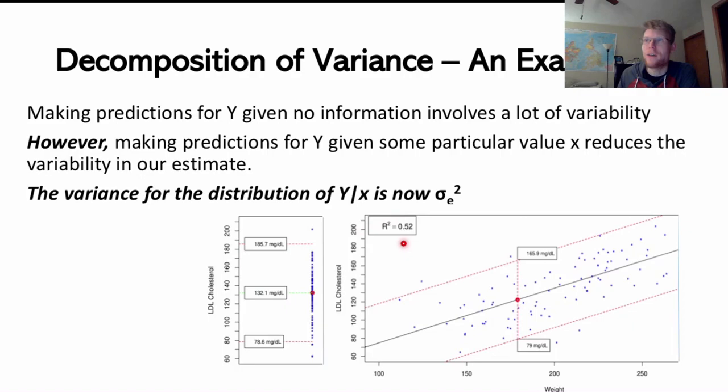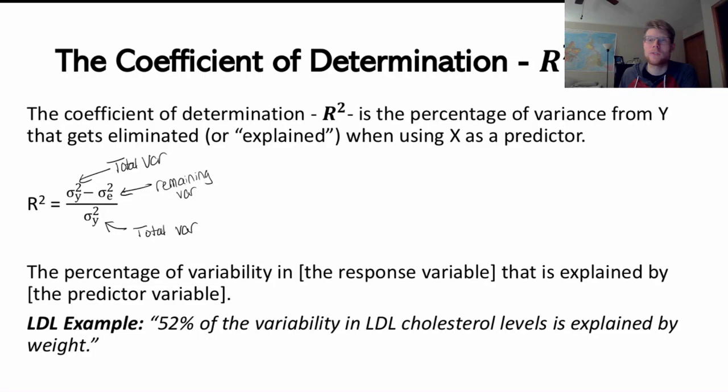In this particular example, it looks like R-squared was about 0.52. We could turn that into 52% in our interpretation. We could say 52% of the variability in LDL cholesterol levels is explained by weight.